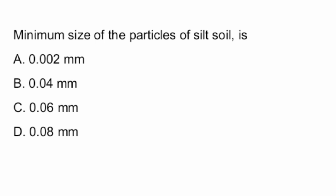Next question: What is the minimum size of the particles of silt soil? The answer is Option A — 0.002 mm.